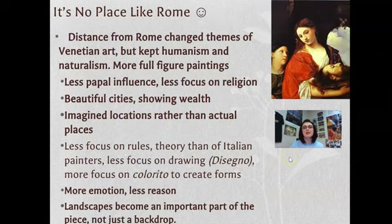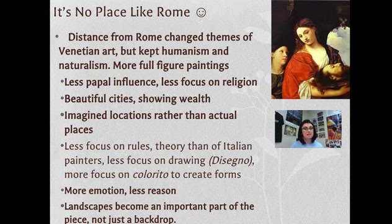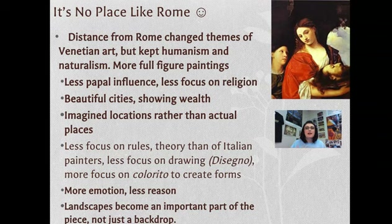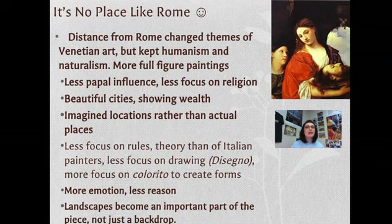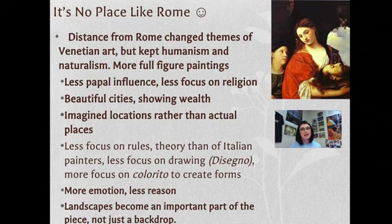It's no place like Rome — Venice was not Rome or Florence in the way they created art. However, they did keep those classical ideas of humanism, and like the high Italian Renaissance, they focused on naturalism. But their idea of beauty was about the content and making that look beautiful. For example, in the high Italian Renaissance we see a lot of portraits showing just the upper body, but Venice did a lot with the entire body. Venice also didn't really answer to the Pope, so religion wasn't as much of a focus.